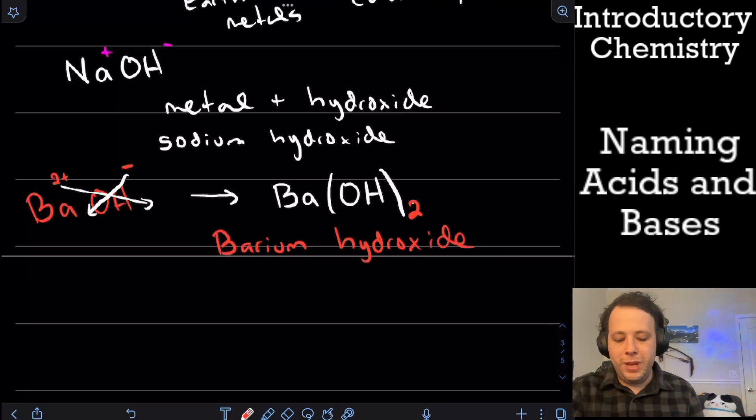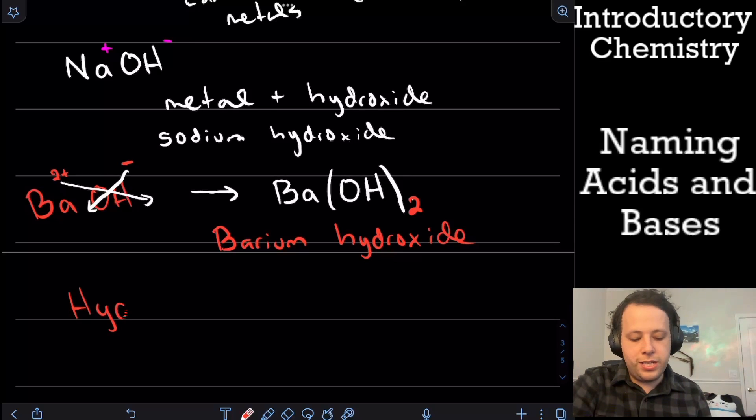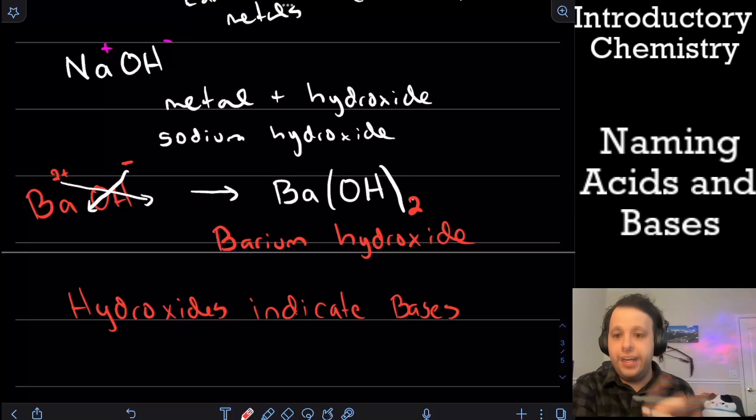So it's not too bad when we come to naming. The hardest part is just making sure you balance it. So hydroxide is always in the end. If you see that, that indicates a base. So hydroxides indicate bases. All right. So hydrogens in the front indicate acids, hydroxides in the back indicate bases.